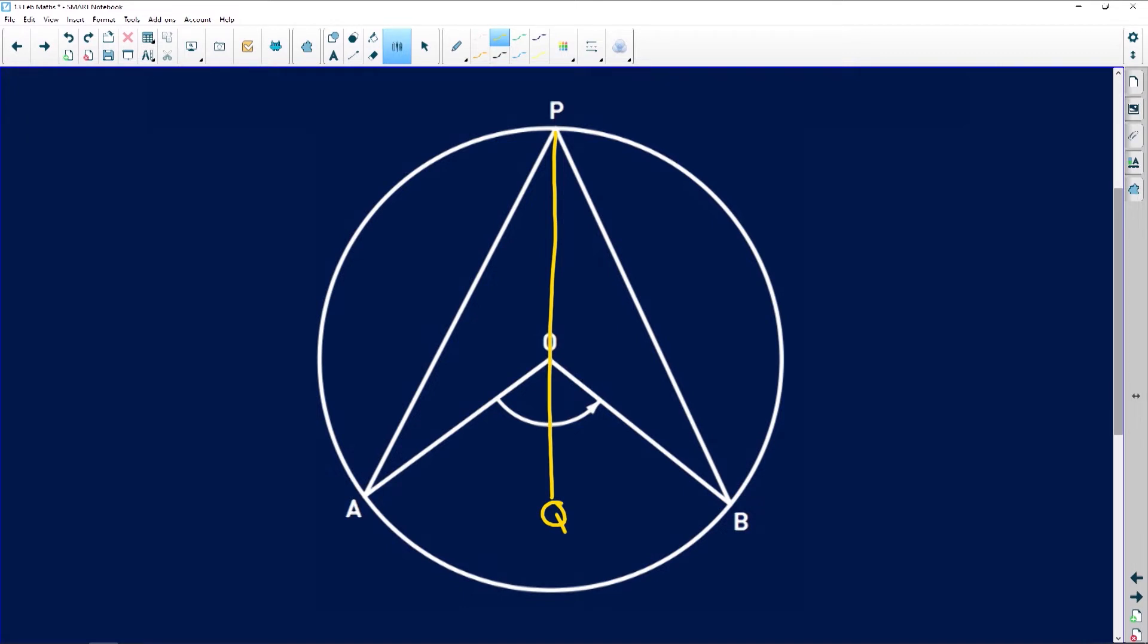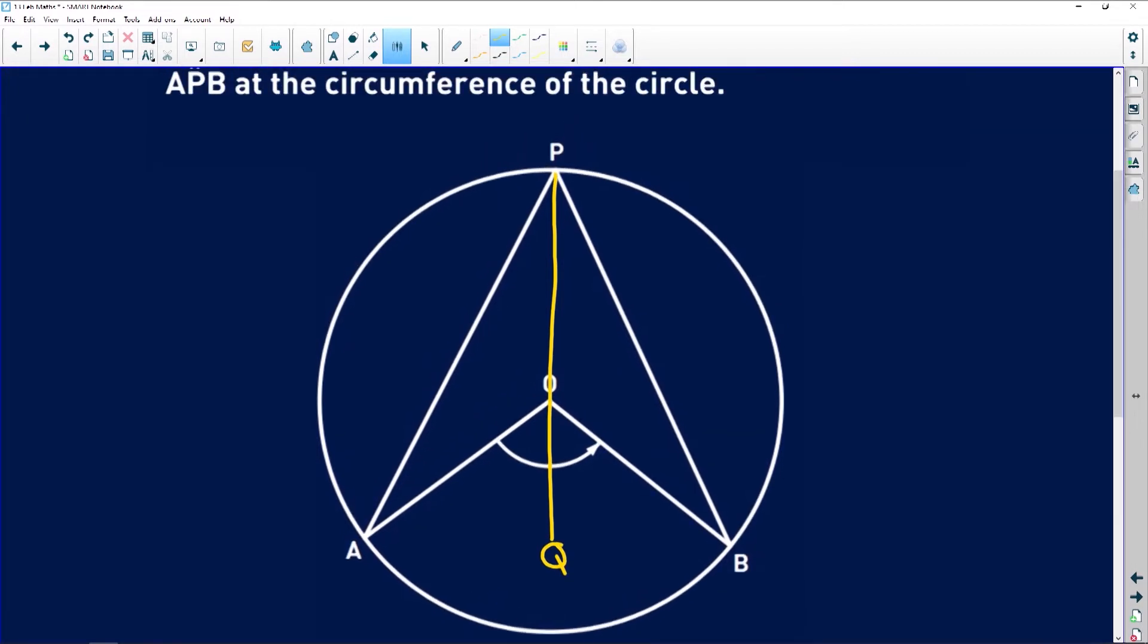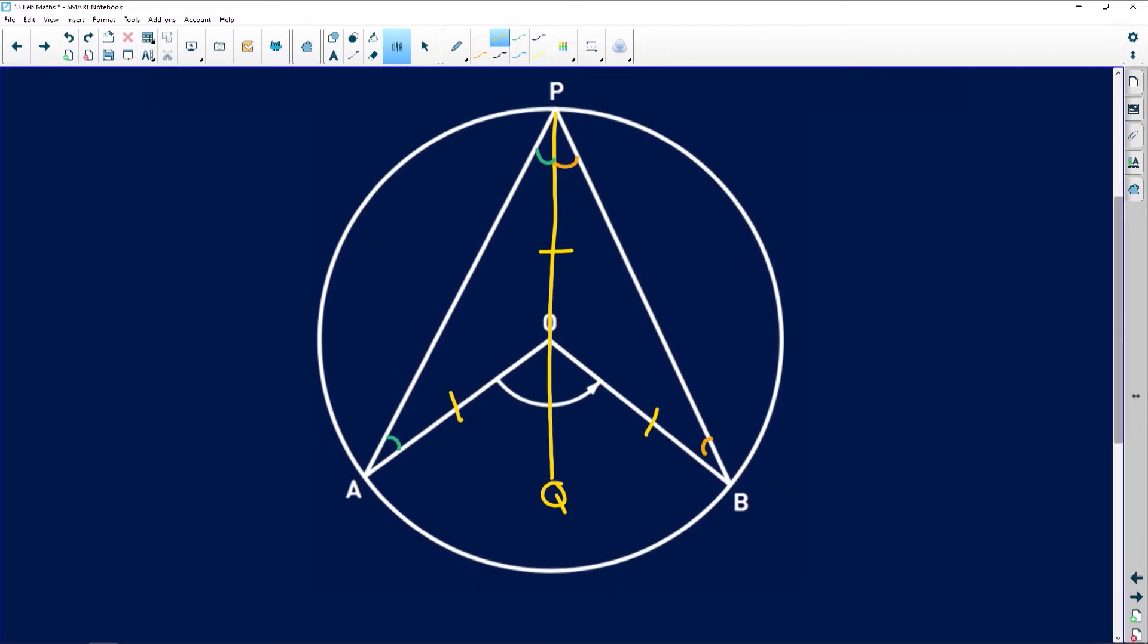Guys, very important for this proof. The moment you do that, radius, radius, radius. They are equal to each other. Which means that in this triangle, these two angles are equal. And in this triangle, these two angles are equal because of isosceles triangle. So once you've done that, you can now start working.